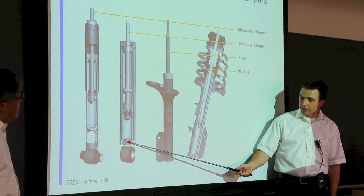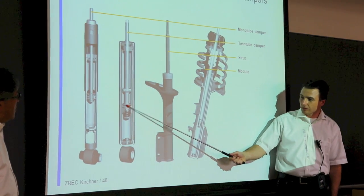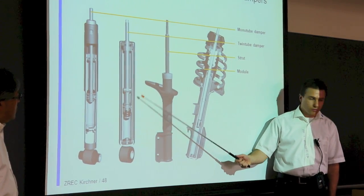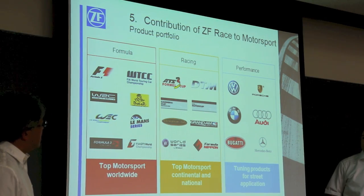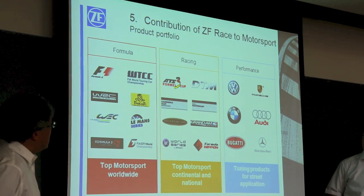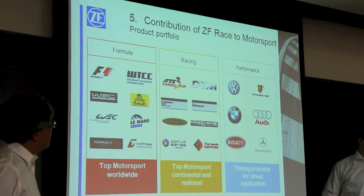Get your bump damping from the base valve and your rebound damping from the base. This is the main part of the car — the racing part and the performance part of the car.